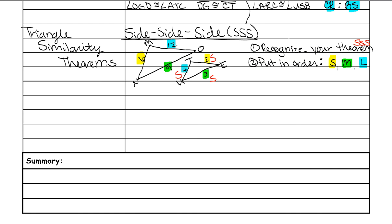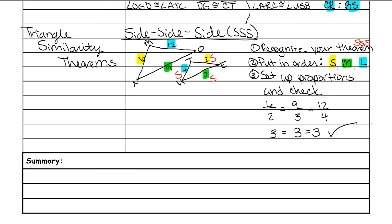The next thing we need to do is set up our proportions and check the sides — set each color over each other and make sure they all reduce to give us the same number. Does 6 divided by 2 give us the same thing as 9 divided by 3, and 12 divided by 4? 6 divided by 2 is 3, 9 divided by 3 is 3, and 12 divided by 4 is 3. Since they all give me the same number, they are side-side-side similarity. If any one of these is not the same number, then they cannot be similar by side-side-side.